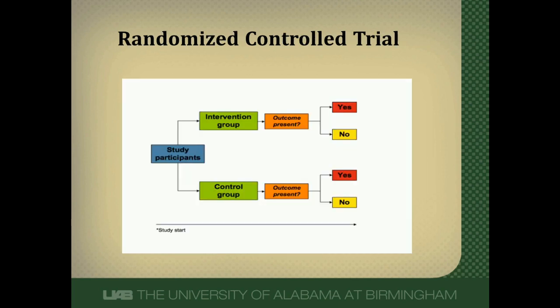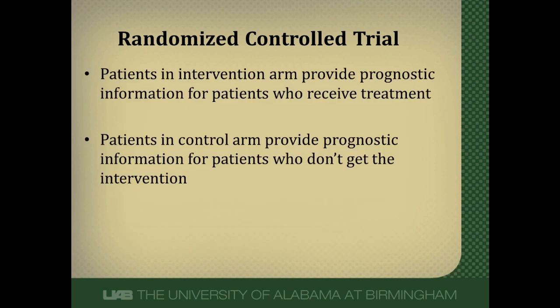Randomized control trials look very similar to cohort studies. We have an exposed group — the intervention group — and an unexposed group — the control group. But instead of patients self-selecting into one of these two groups, as a researcher we determine which group they go into by randomization; essentially a coin flip determines which arm they're in. The importance of randomization is that it equalizes all other things that could impact outcome, like age, comorbidities, and demographic factors. We then follow them over time for outcomes. Randomized control trials can give us prognostic information about the intervention arm and the control arm.